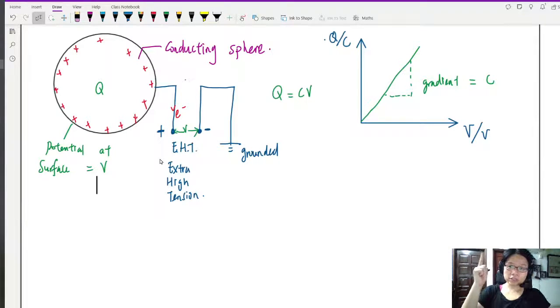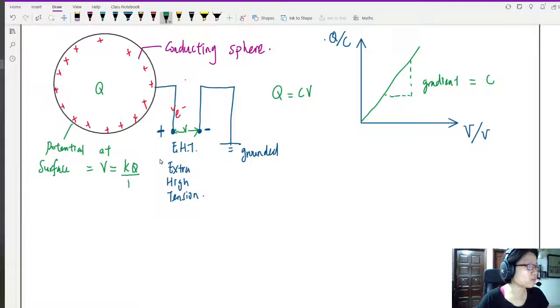So if the potential at the surface is at V, and if you remember our previous chapter, what's the equation for V? KQ over R squared? Wait, no squared. KQ over R. What is R again? R is the radius of our beautiful sphere.